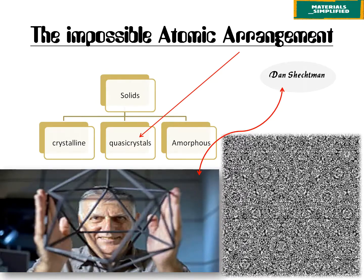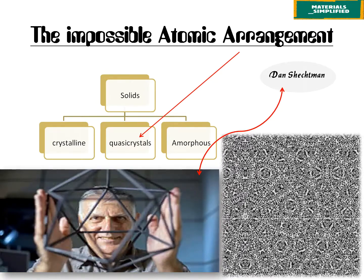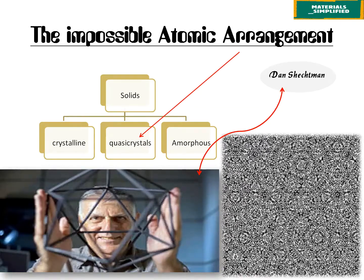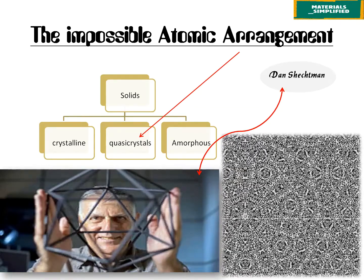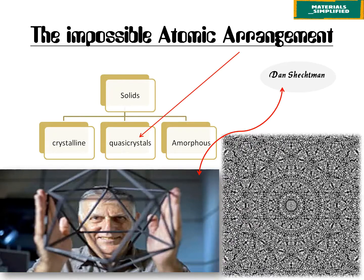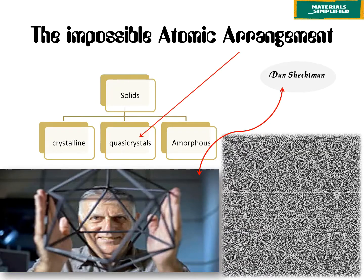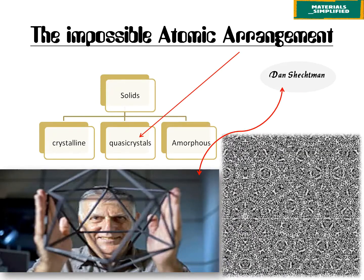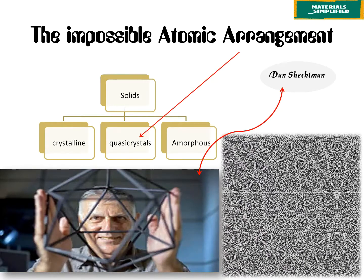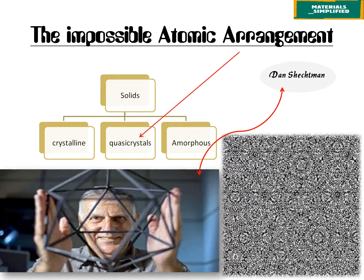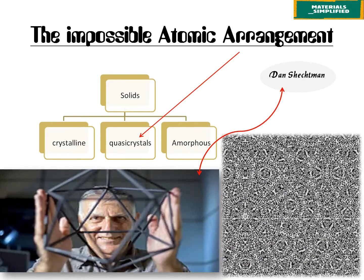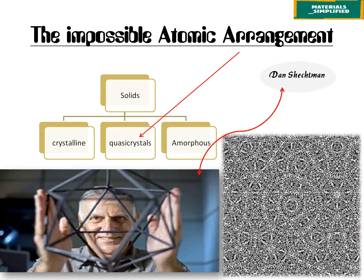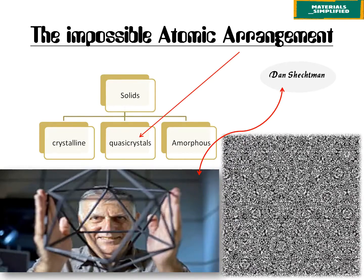Dan Shechtman was the winner of the Nobel Prize for Chemistry in 2011 for his discovery of seemingly impossible crystals in metal alloys, or in simpler terms, for his discovery of quasicrystals.